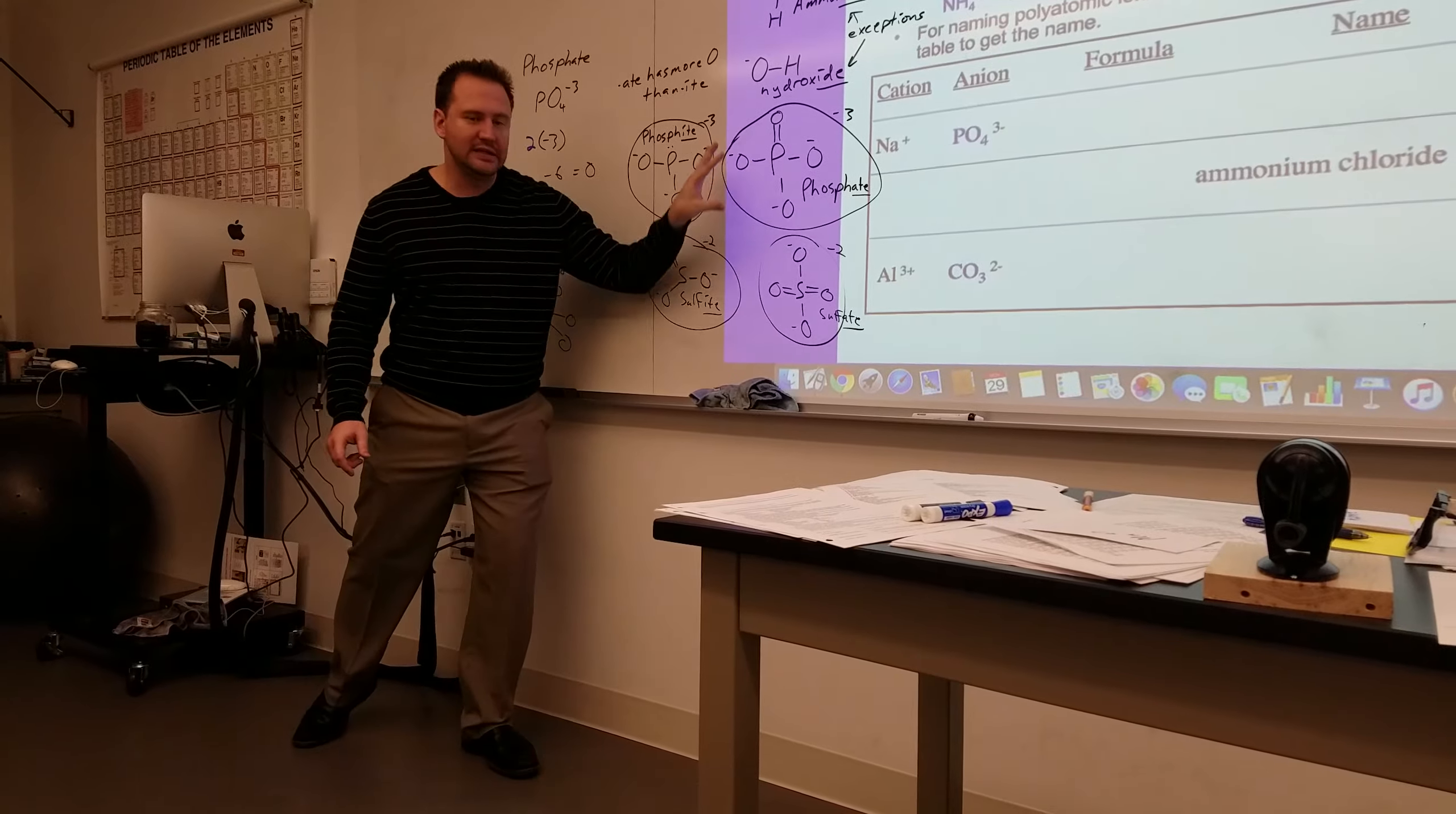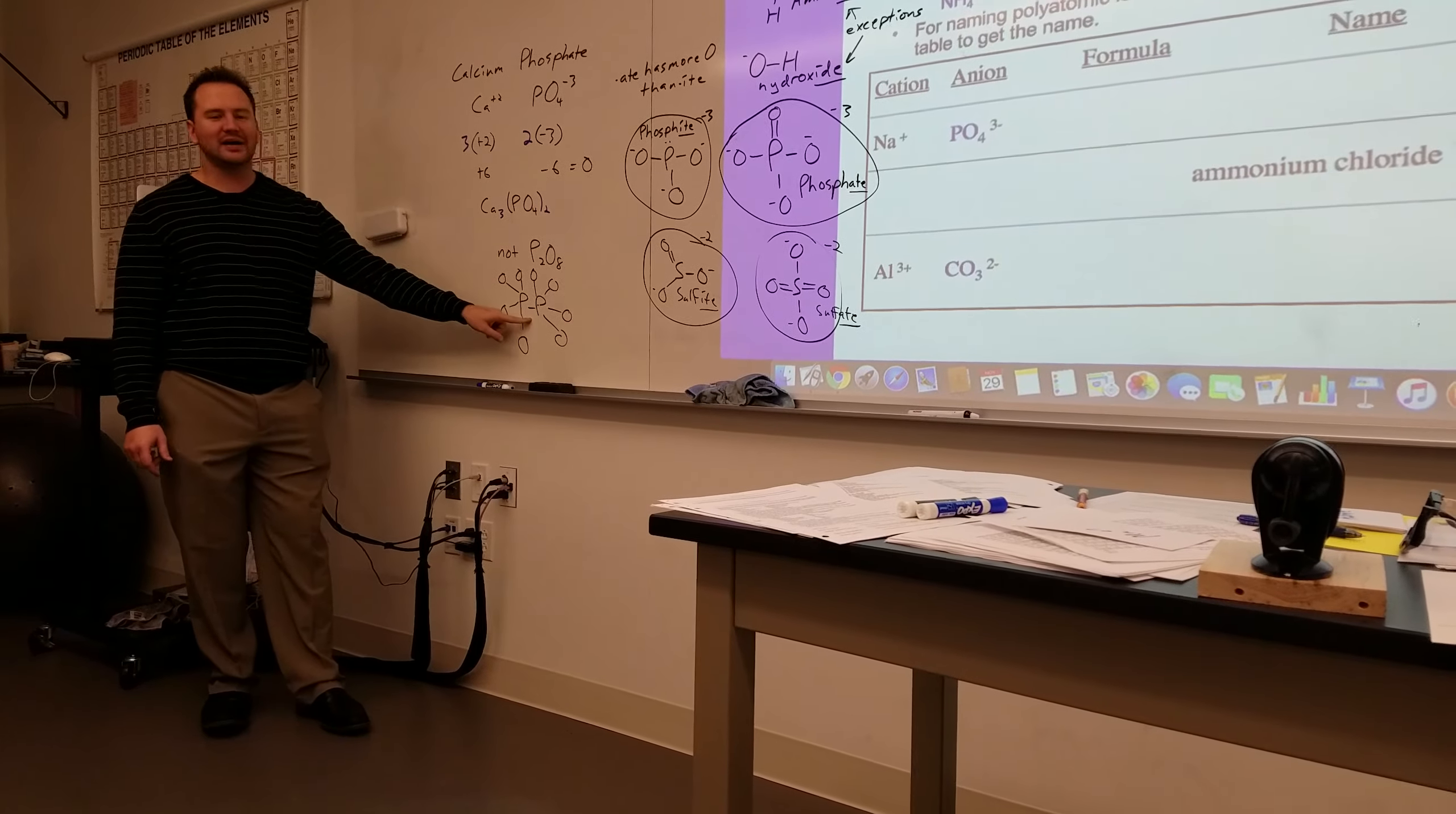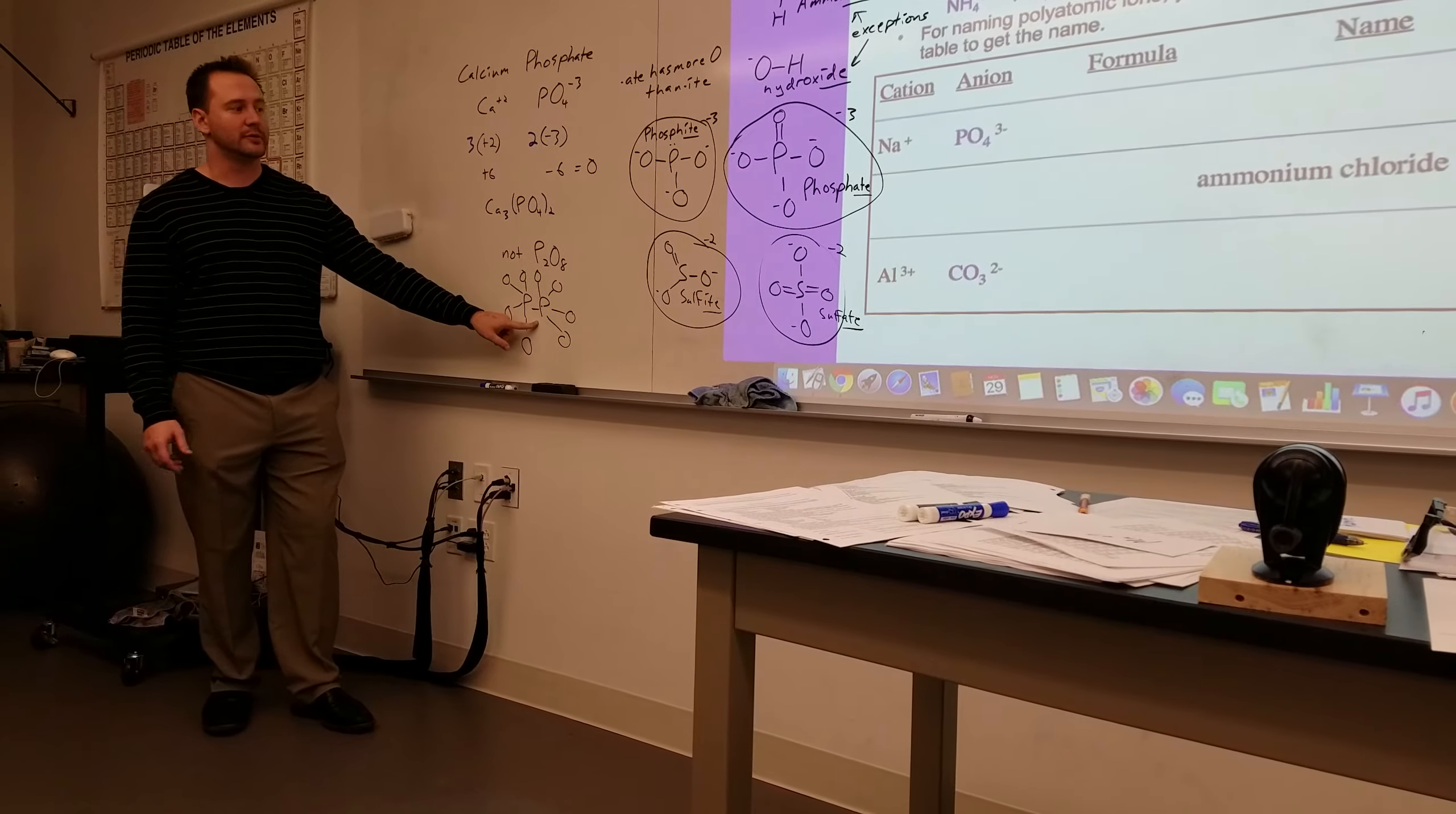That means you have two of these phosphates. If you say P2O8, that implies something that looks more like an octopus than anything else, and doesn't actually exist in real life. And you'll learn why in the next season.